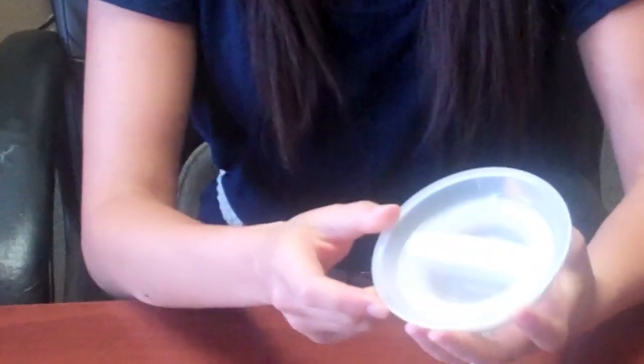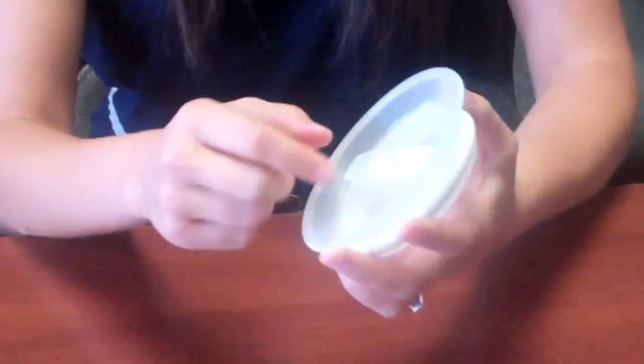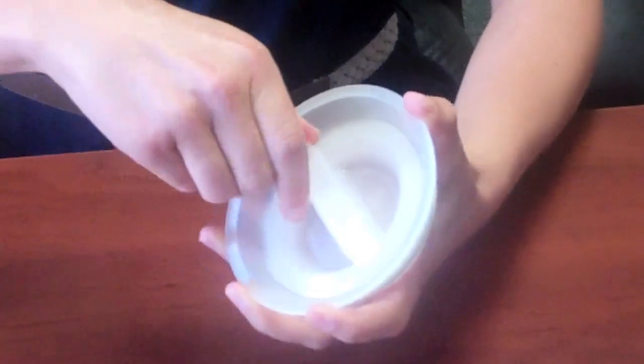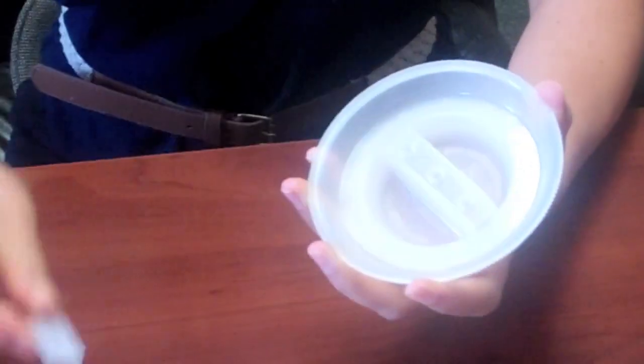So now, we're going to take apart the lid so you can get a good clean in there. What we want to do first is unsnap this middle piece, it comes right off.